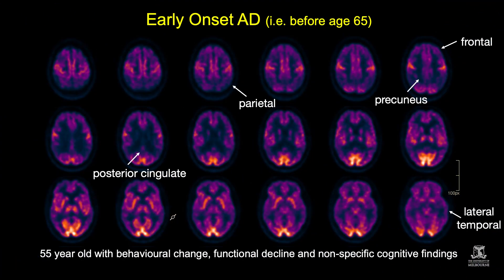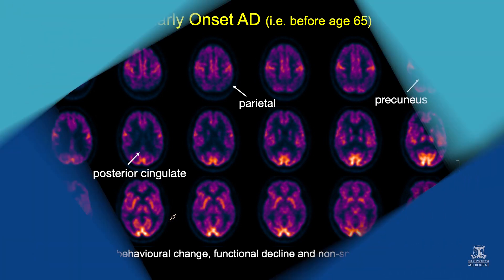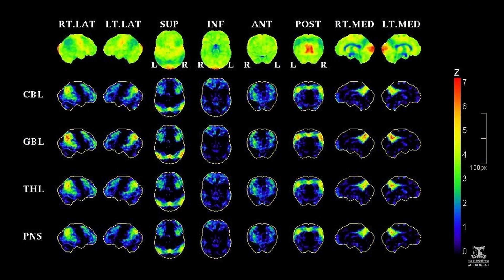Here's an example of a 55-year-old male who presented with behavioural change, functional decline, and non-specific cognitive findings. The diagnosis was unclear and a psychiatric disorder was suspected, but the FDG-PET shows very profound changes of Alzheimer's disease — a diagnostic scan for early onset Alzheimer's disease. This display shows the reduction in brain areas by Z-score, or number of standard deviations away from normal, and the pattern is typical for Alzheimer's disease.